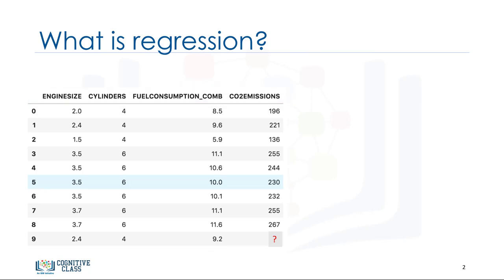The question is, given this data set, can we predict the CO2 emission of a car using other fields, such as engine size or cylinders? Let's assume we have some historical data from different cars, and assume that a car such as in row 9 has not been manufactured yet, but we're interested in estimating its approximate CO2 emission after production. Is it possible?